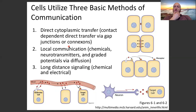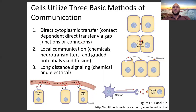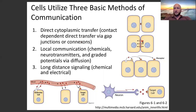In direct cytoplasmic transfer, there is a protein tube connecting the cytoplasm of two cells — a direct connection. This is like the Caldecott Tunnel connecting Lafayette and Oakland. It's a tunnel, a direct passage that things can move between. One example is a gap junction or a connexon. We'll see these in two main places in this class: in heart cells, where it helps coordinate their function, and in neurons of our central nervous system, where some communicate via gap junctions.